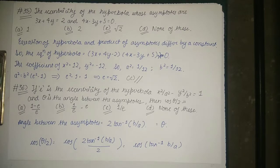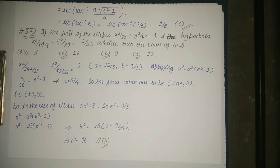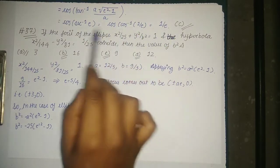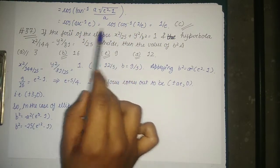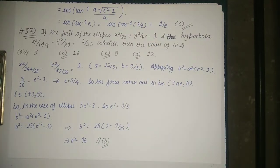The angle between the asymptotes is given by 2·tan⁻¹(b/a). So the value of cos(θ/2) = cos(2·tan⁻¹(b/a) / 2) = cos(tan⁻¹(b/a)). Converting tan⁻¹(b/a) using b = a·√(e² - 1), this becomes cos(tan⁻¹(a·√(e²-1)/a)) = cos(sec⁻¹(e)) = cos(cos⁻¹(1/e)) = 1/e. So the correct option for this question is option C.